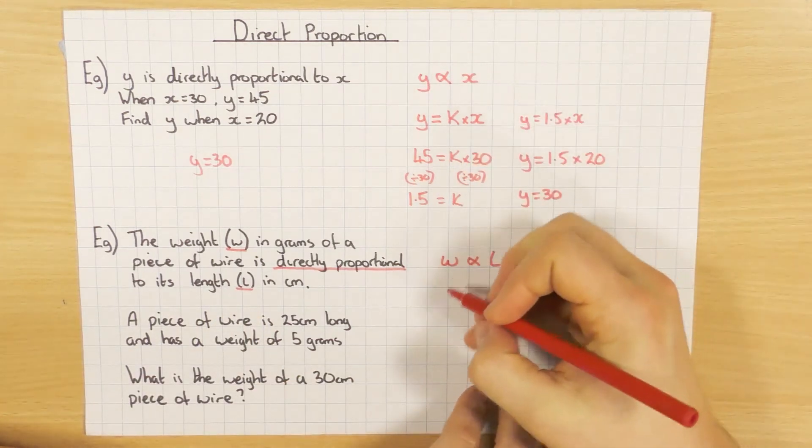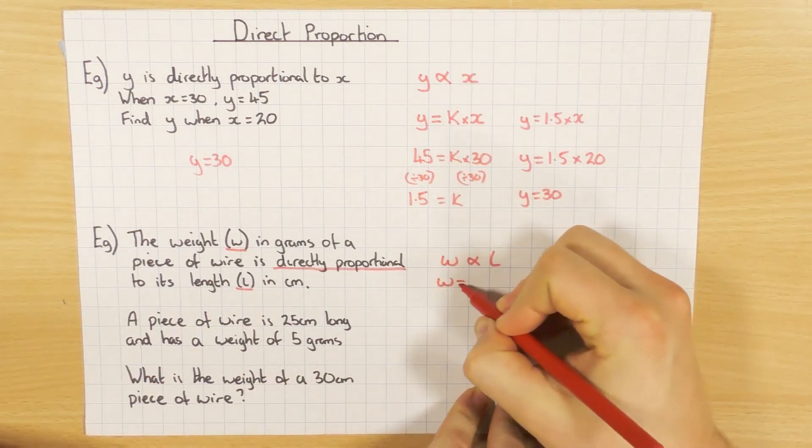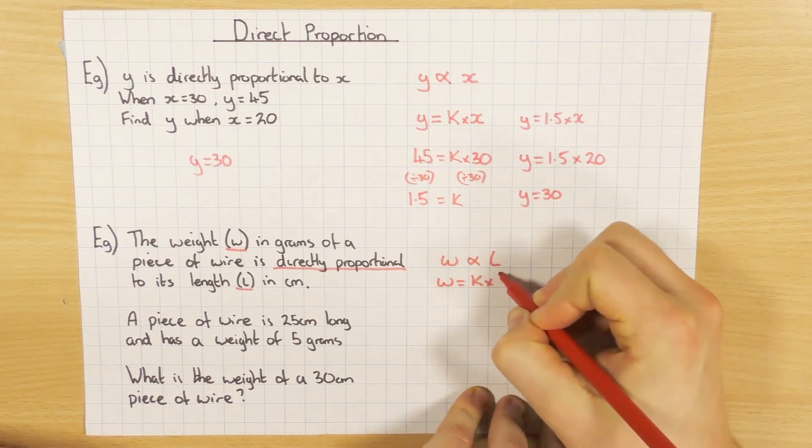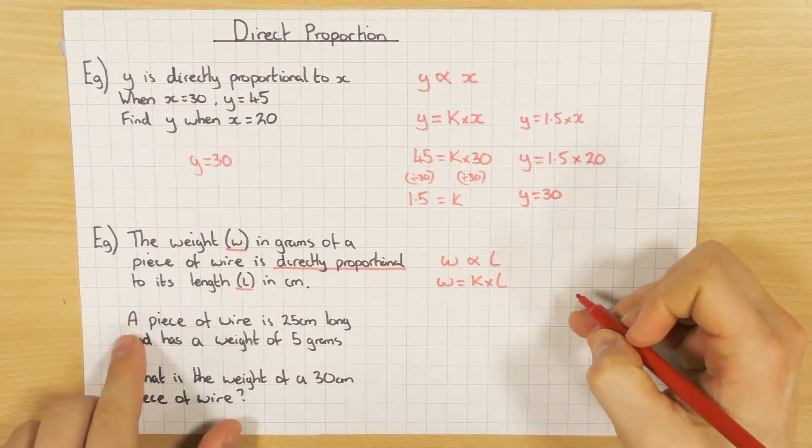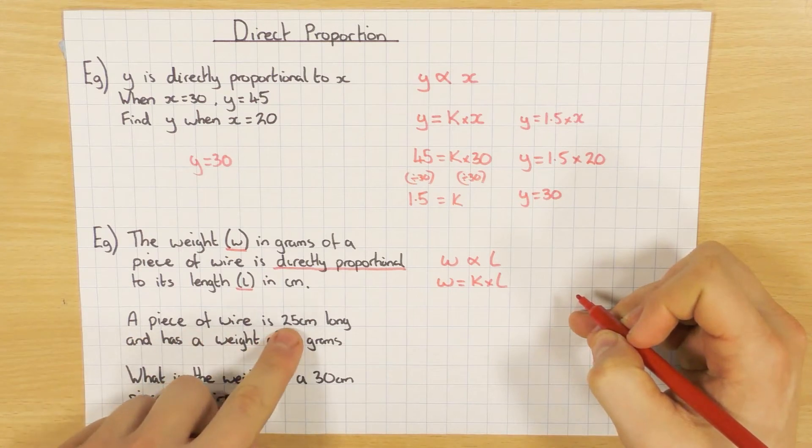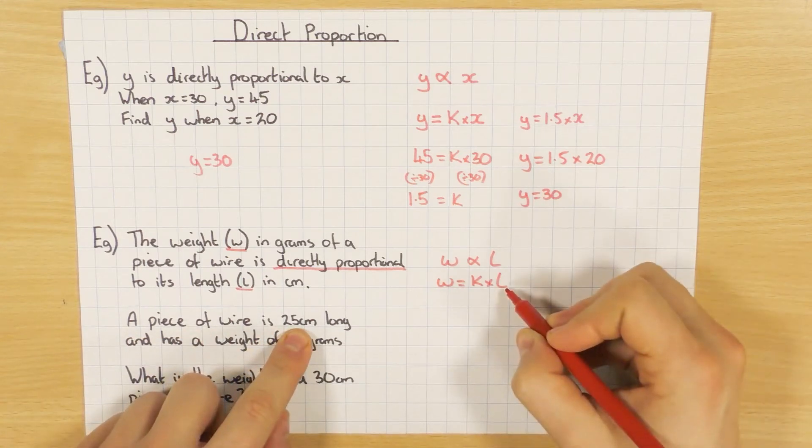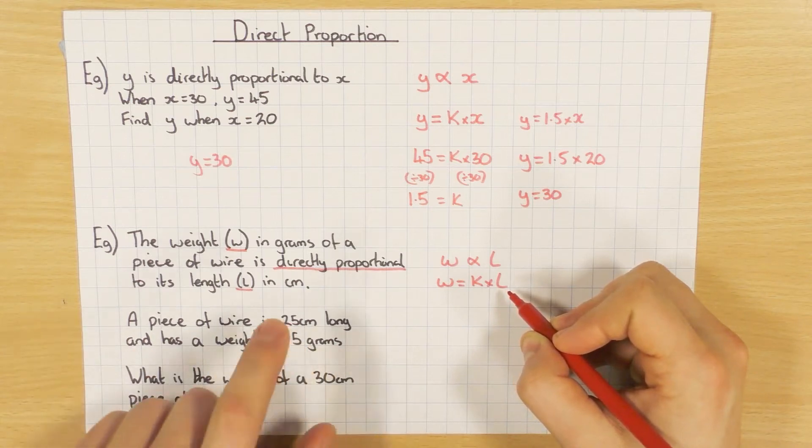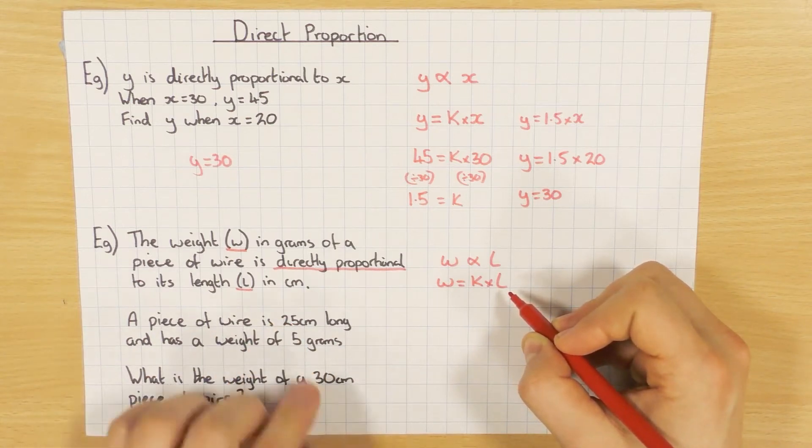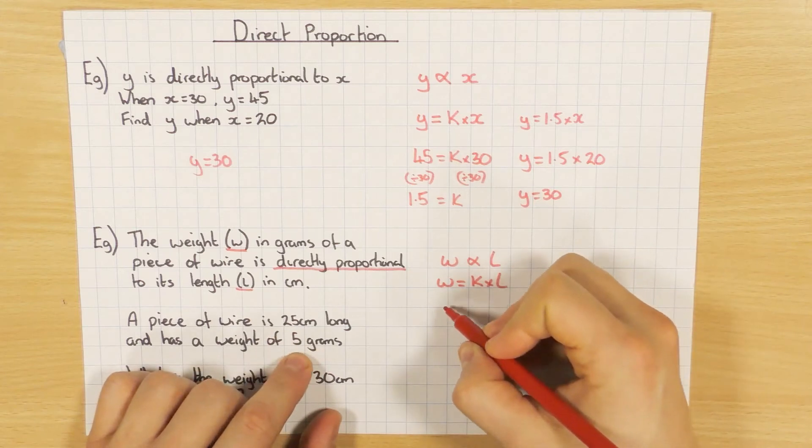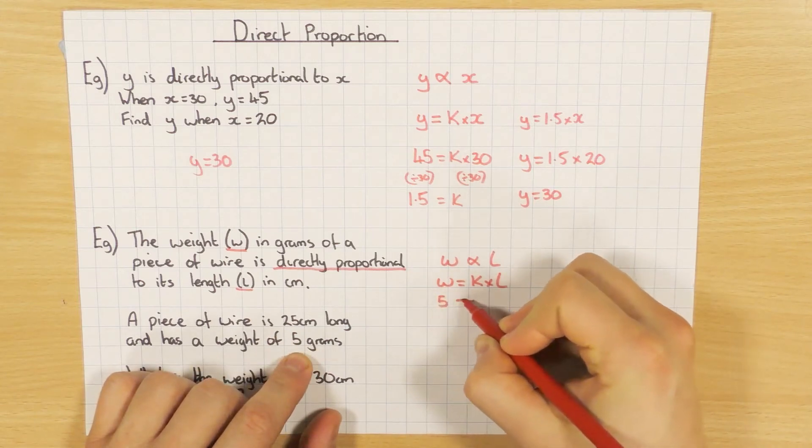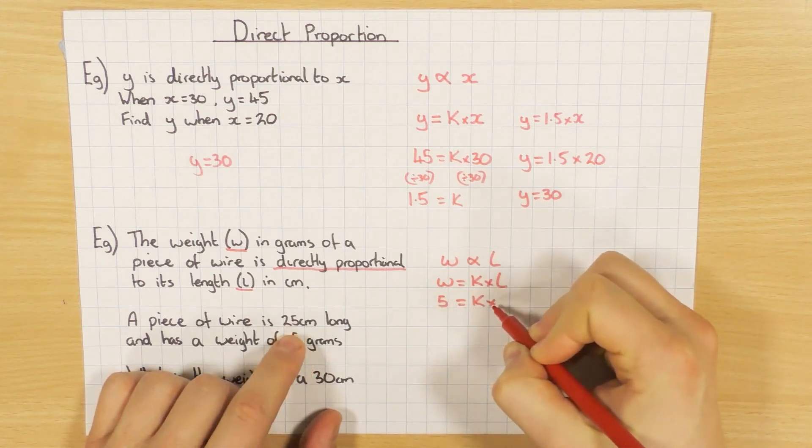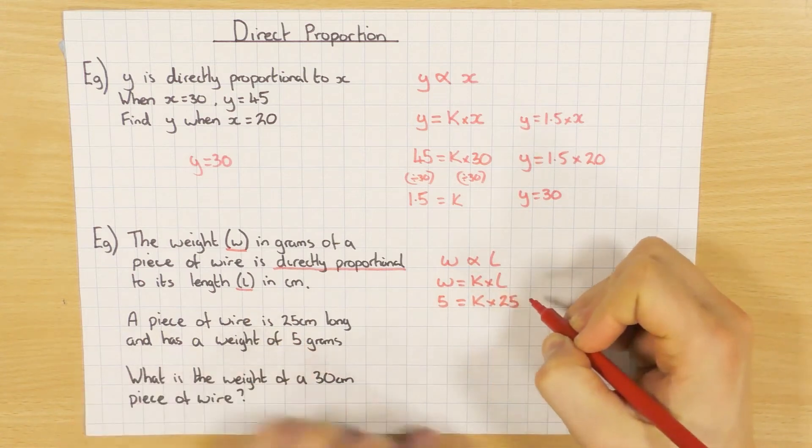Now I'm going to make my formula. So w equals the constant times l. Let's carry on reading. A piece of wire is 25 centimetres long. So the length is 25 centimetres. And it has a weight of 5. So weight of 5 when the length is 25. So let's put those values in. So weight of 5 equals k times l, which was 25.